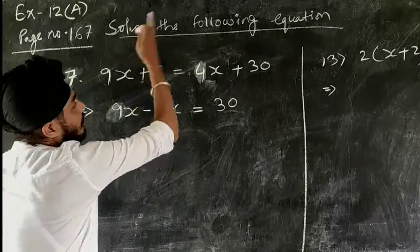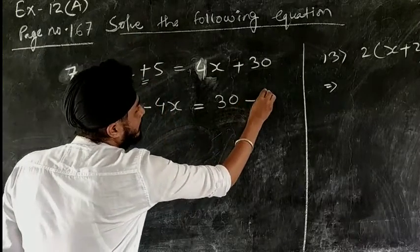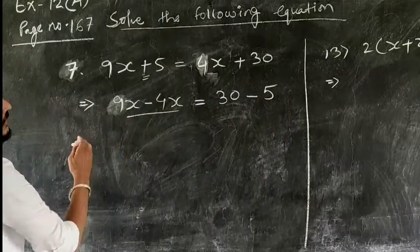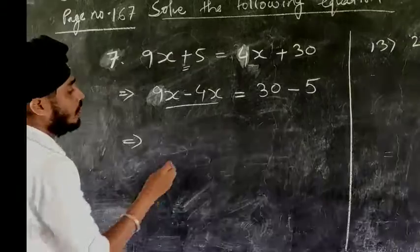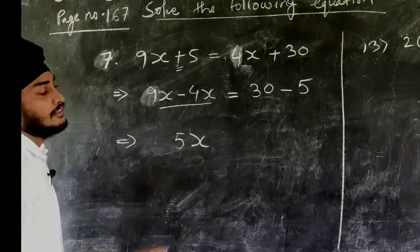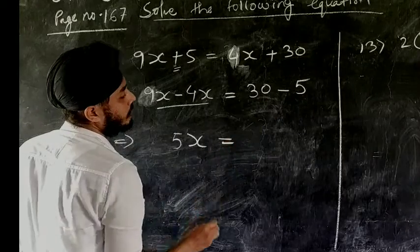Plus 5 is brought to the right hand side, it will become minus 5. I brought all x on the left hand side. So 9x minus 4x would be 5x, equal to 30 minus 5.